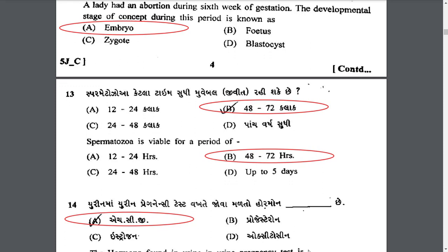Spermatozoa ketla time sudi movable rahi shakke che — spermatozoa is viable for a period of 48 to 72 hours.